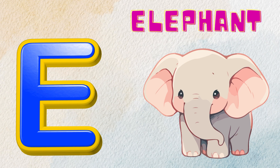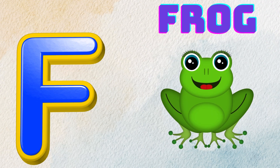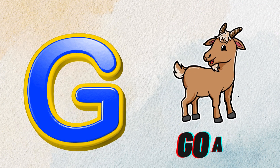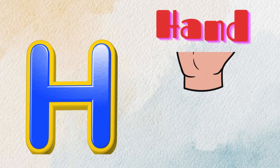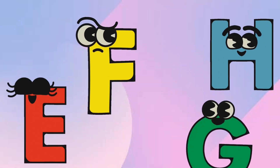E is for Elephant, E-E-Elephant. F is for Frog, F-F-Frog. G is for Goat, G-G-Goat. H is for Hand, H-H-H-Hand.